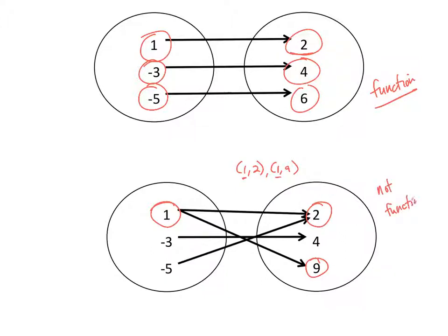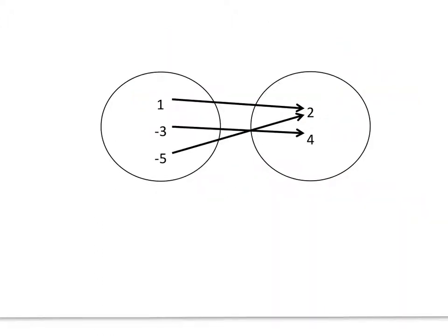You cannot have more than one arrow coming out of one of your domain values. Notice on this circle map that I have multiple arrows coming into the number 2, but remember that's a y value, and it's okay for the y values to repeat. This function would have 1 being mapped to 2, and -5 being mapped to 2. It's okay for the y's to repeat.